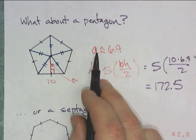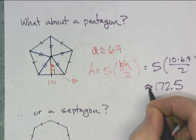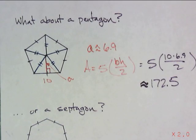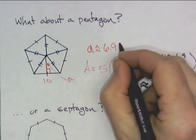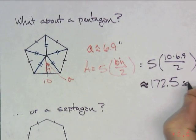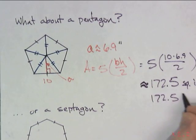And since we had an approximate apothem, this answer should actually be approximate also. And I didn't include units. I should probably include units. If we say inches here, this would be square inches. The symbol for square inches would be square inches.